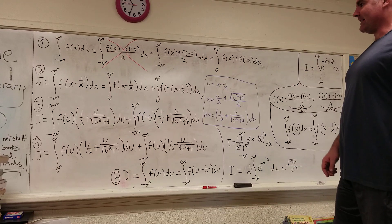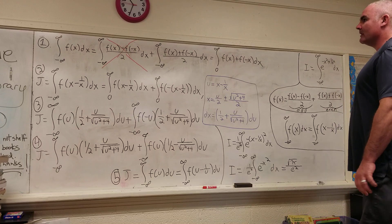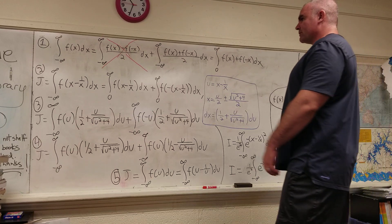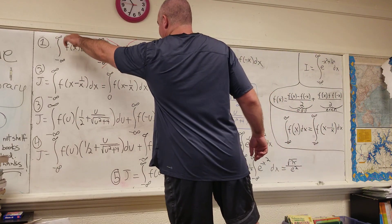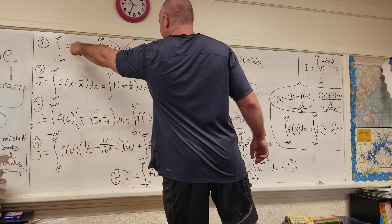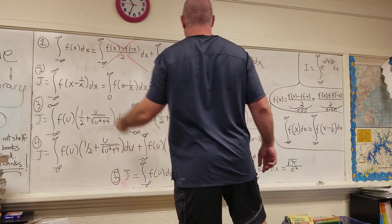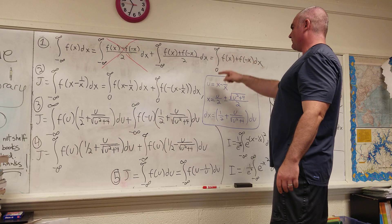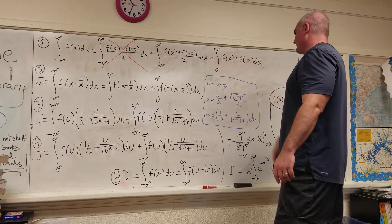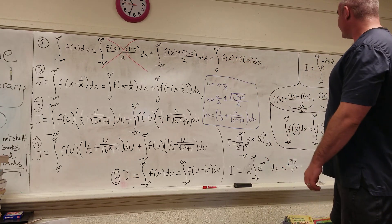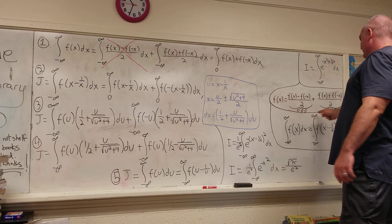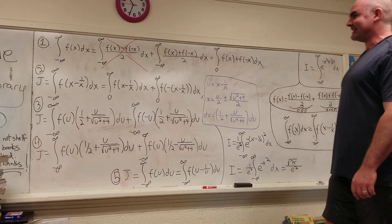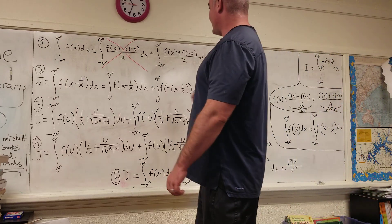That's going to be the main part of this video. The first step is to show that the integral from negative infinity to infinity of f of x dx is equal to the integral from zero to infinity of f of x plus f of negative x dx. We start by using this property and breaking the function up into its odd and even parts.